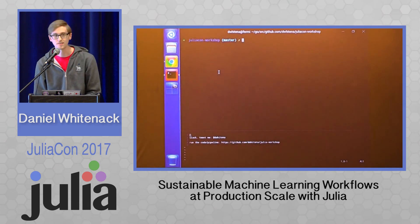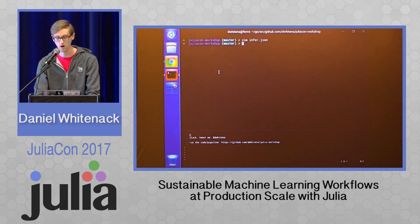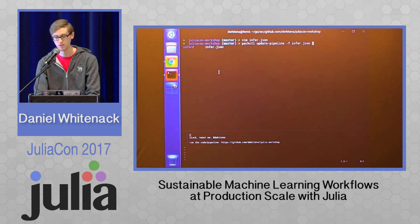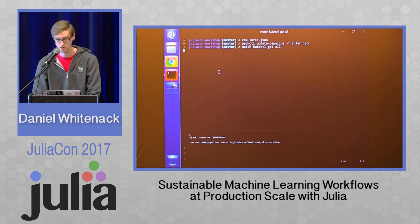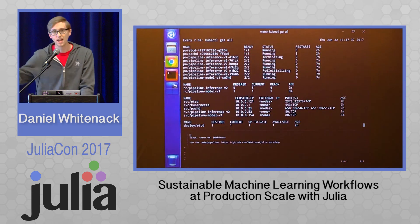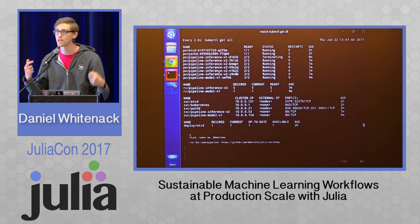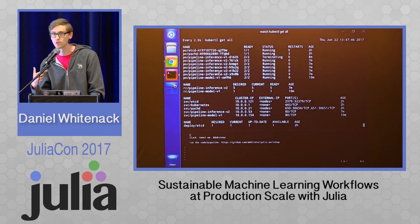The last thing I'll show you is how easy it is to make this a true distributed pipeline. If I go in here, I can increase my parallelism to 5 from 1 — where there was previously one worker doing that inference — and then update that pipeline. What I see now is that I'm automatically spinning up a bunch of workers on my cluster that are going to do this inference in parallel, all running that same Julia script I was running locally on my machine.